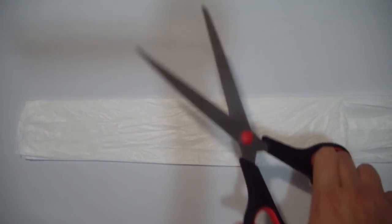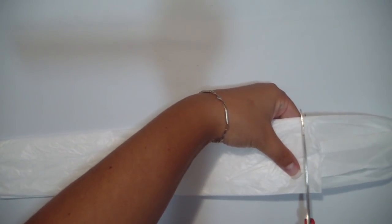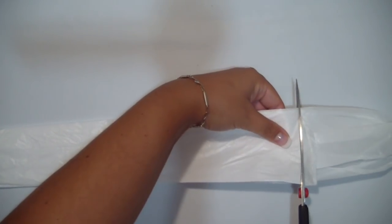So take the scissors and cut away the upper part, the part where the handles are and then the bottom part as well.